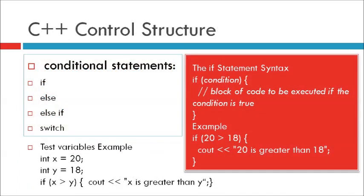Now we are going to learn C++ control structures. There are some usual logical conditions from mathematics like: less than, less than or equal to, greater than, greater than or equal to, equal to, not equal to. We use these conditions to perform different actions for different decisions. C++ has the following conditional statements: if, else, else if, and switch.